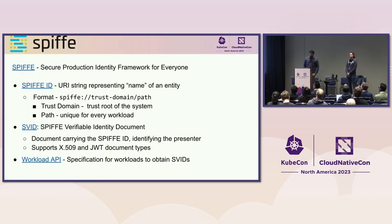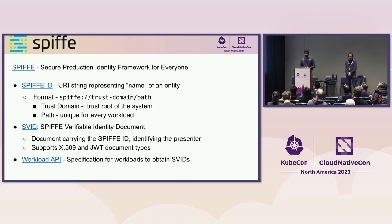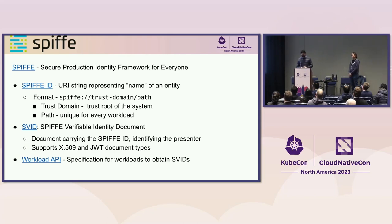So what's SPIFFE? It stands for Secure Production Identity Framework for Everyone, which is a set of standards for securely issuing identity to workloads. It consists of three main components. First is the SPIFFE ID, which is a URI string that uniquely represents the name or ID of a workload — which could be anything like a web server, a database, a microservice, or any single piece of software. The SPIFFE ID URI format is spiffe:// followed by the trust domain and path. The trust domain represents the trust root of the system, for example the domain name for an organization, and the path is unique for a workload.